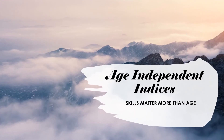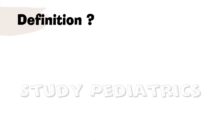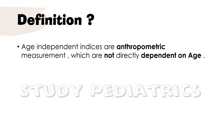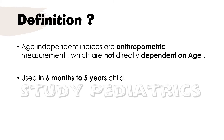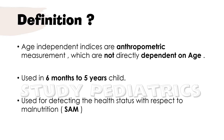Age Independent Indices. Age independent indices are anthropometric measurements which are not directly dependent on age. They are used in children between 6 months to 5 years of age, and are used for detecting health status with respect to malnutrition.